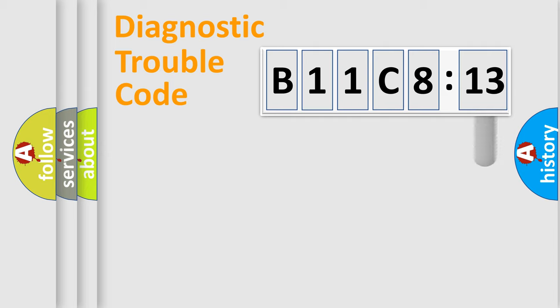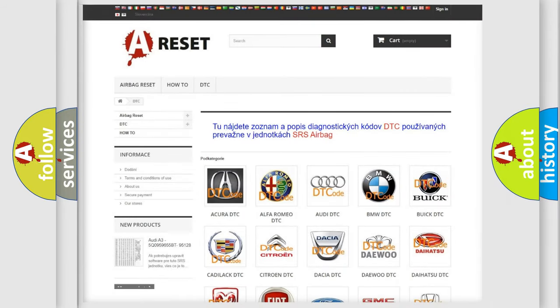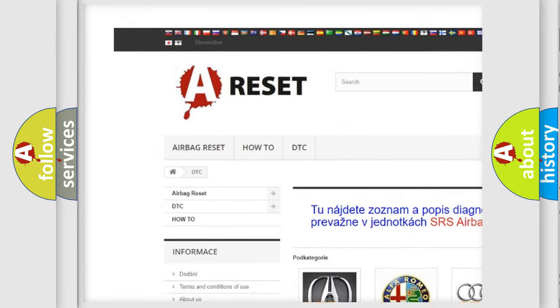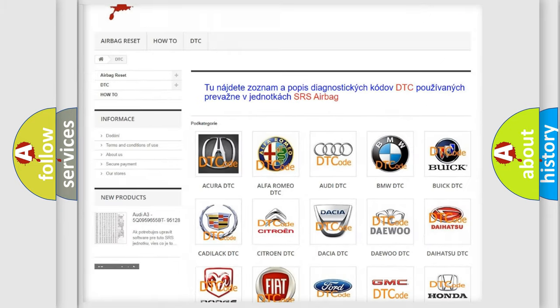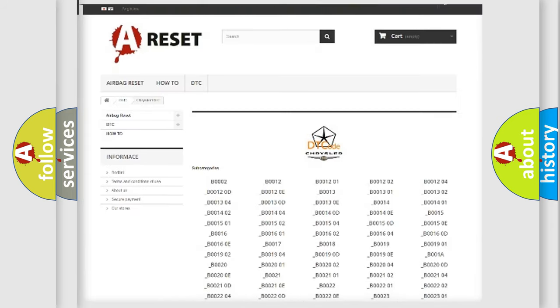Our website airbagreset.sk produces useful videos for you. You do not have to go through the OBD2 protocol anymore to know how to troubleshoot any car breakdown. You will find all the diagnostic codes that can be diagnosed in Chrysler vehicles, and many other useful things. The following demonstration will help you look into the world of software for car control units.